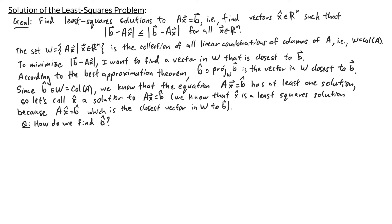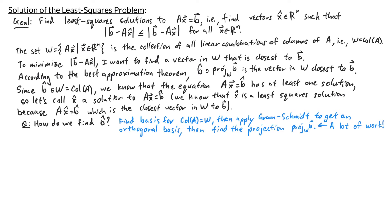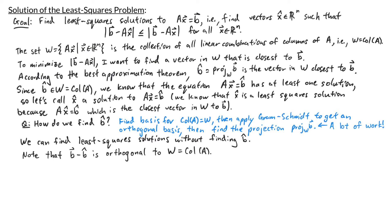A question that remains is: how do we find B̂? B̂ is the projection of B onto W, but in order to do that projection I would need an orthogonal basis for W. I know how to find a basis for W because it's just the column space of A, and I can turn that basis into an orthogonal basis using the Gram-Schmidt process. But that takes a lot of work. Luckily, there's a way to find B̂ without first finding a basis for the column space of A and then applying the Gram-Schmidt process. Note that the vector B minus B̂ is orthogonal to W, which is the column space of A.